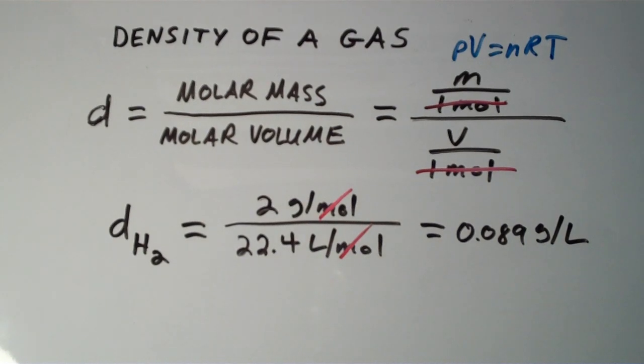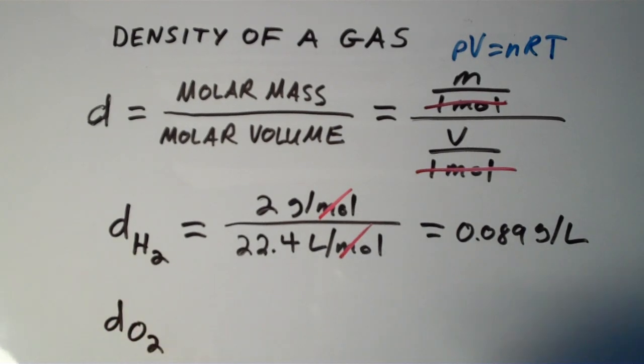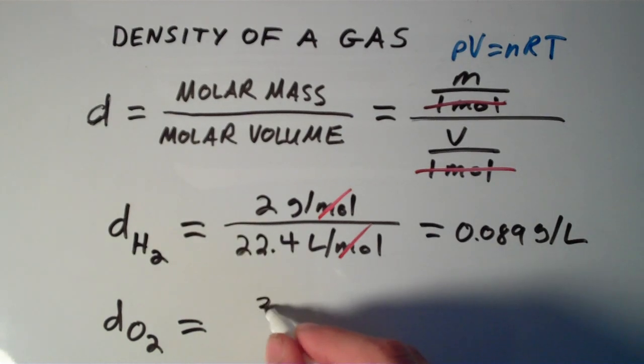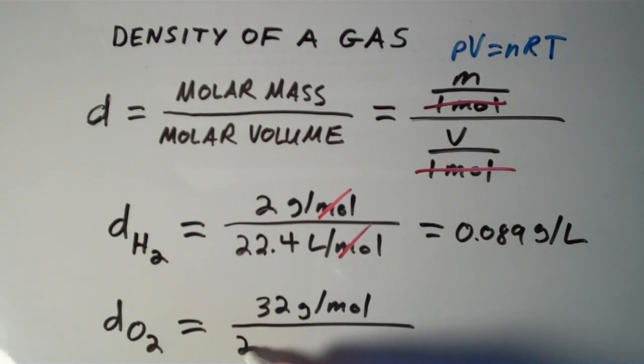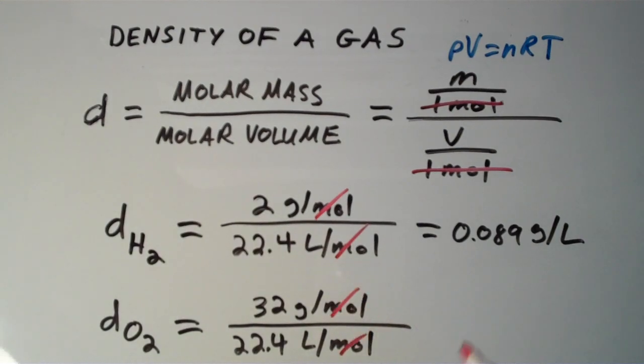Now let's calculate the density of another gas, oxygen gas O2. I'm going to do the same thing, molar mass over molar volume. Molar mass of O2 is about 32 grams per mole. Molar volume of any ideal gas at STP is again 22.4 liters per mole. Moles cancels with moles, I'm left with a density in grams per liter, and that number turns out to be about 1.43 grams per liter.